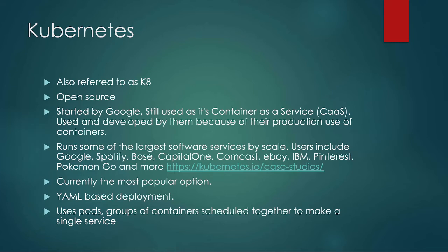Kubernetes is the magic robot that does all of the box management. It is also referred to as K8s. It is open source and was started by Google as part of their container-as-a-service infrastructure. It was developed by Google because of the way they needed to scale up their production. Google is a huge company with lots of things happening every single second, so having in-house solutions for scalability is not uncommon. Google developed this to deal with the issues they have with all of the people using their services.